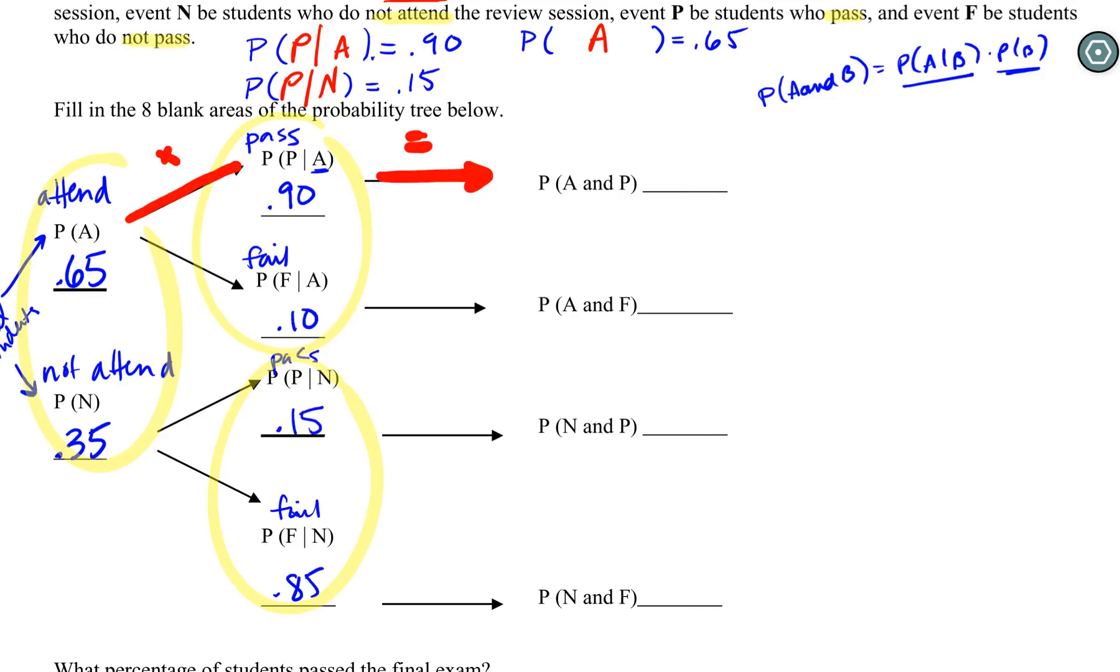So this times this equals that. So as multiplication, I've got to bust out my calculator again, 0.585. And then we do the same thing down the next row. 0.65 here - I'll write down what I'm multiplying - 0.65 times that 0.1, which will give me 0.065. Then we'll have 0.35 times the 0.15, which is 0.0525.